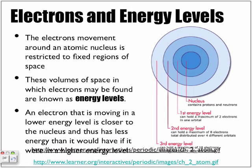Electrons and energy levels. The electron movement around an atomic nucleus is restricted to fixed regions of space. We looked at it according to the Bohr-Rutherford model where we had our nucleus and we had something called orbitals or shells in which electrons circle around. But now we're going to move away from that image. That was a simple way to describe where the electrons are, but it's not correct because in actuality...